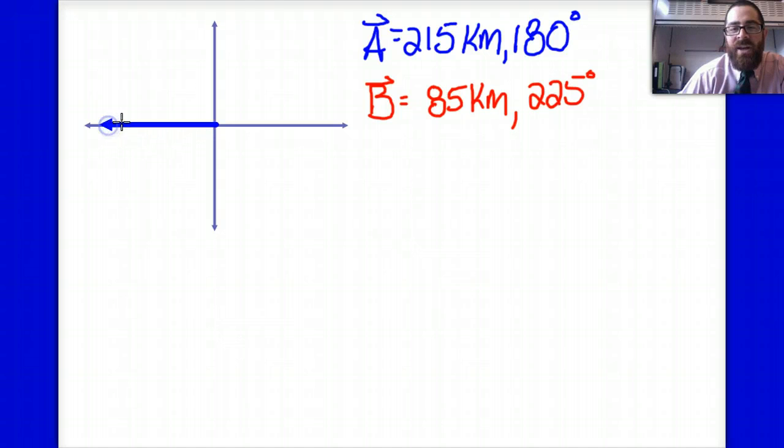I'm going to go ahead and draw this first vector here. I've graphically drawn it in. It's 215 units long so its magnitude and length are related to each other and it's at 180 degrees. And I'm also going to draw in my smaller 85 kilometer displacement vector roughly about here. And I should recognize that the goal here is to add these two vectors.